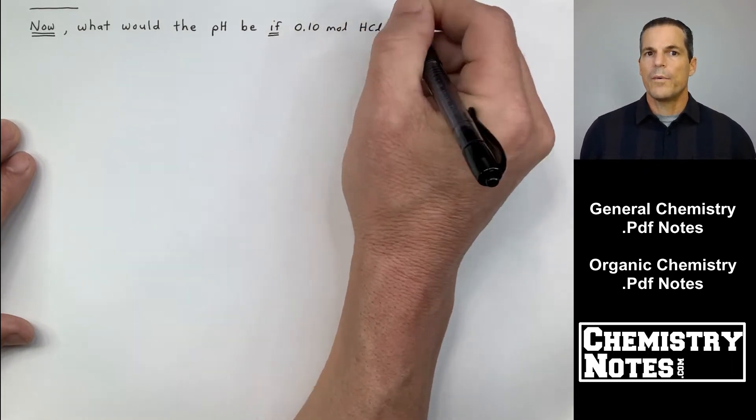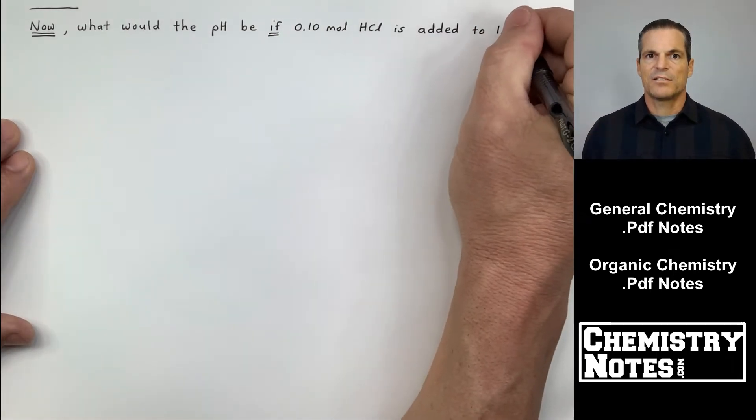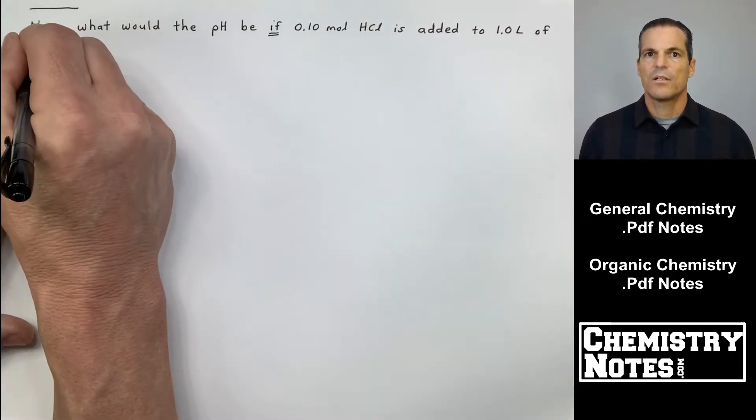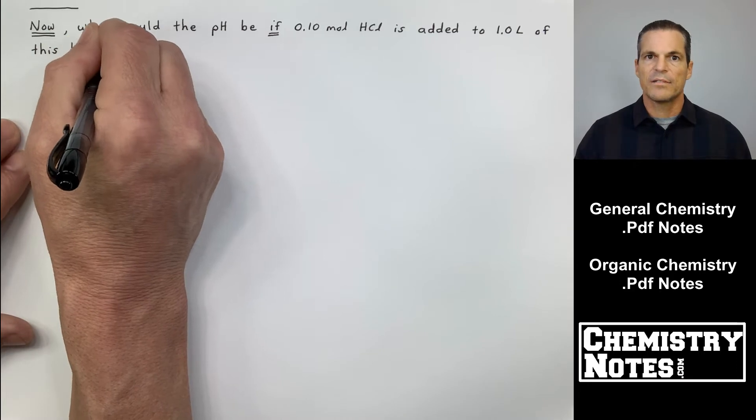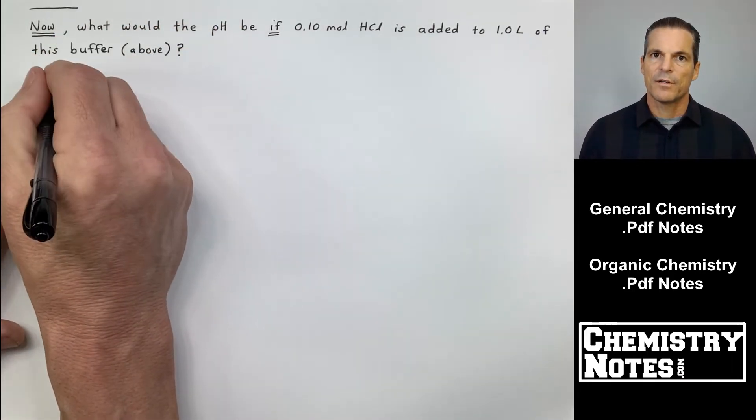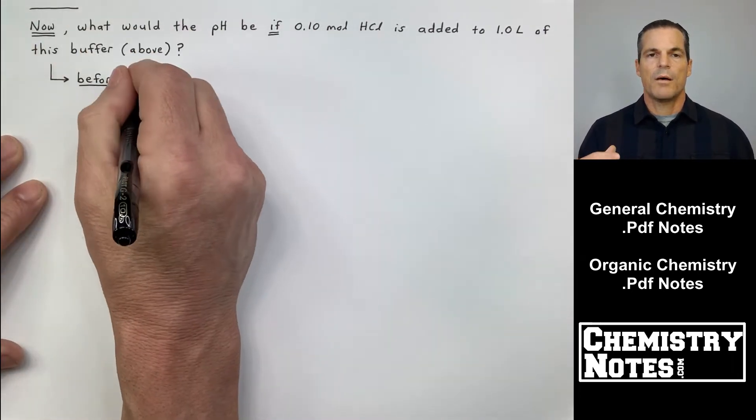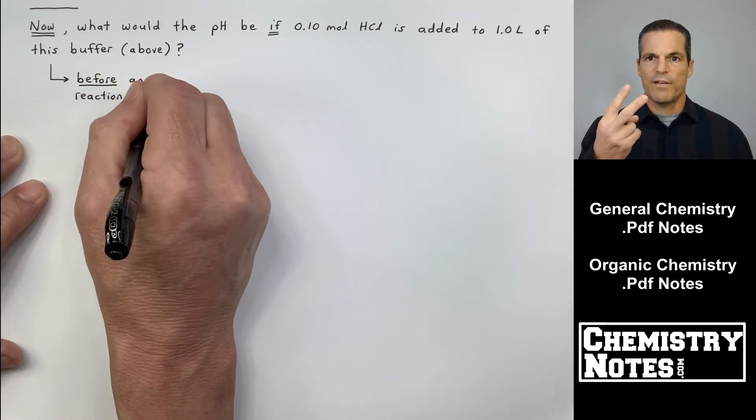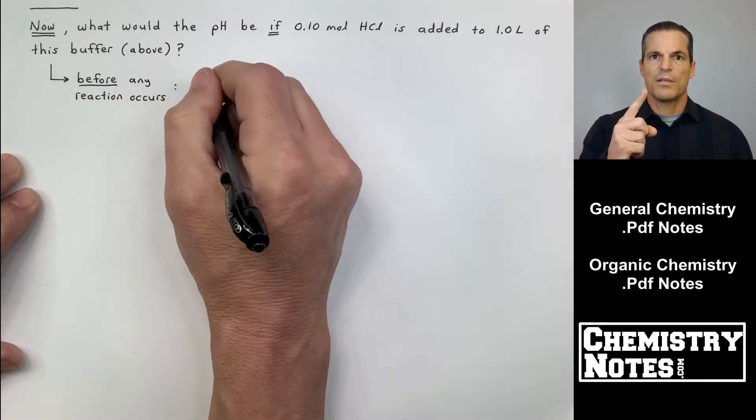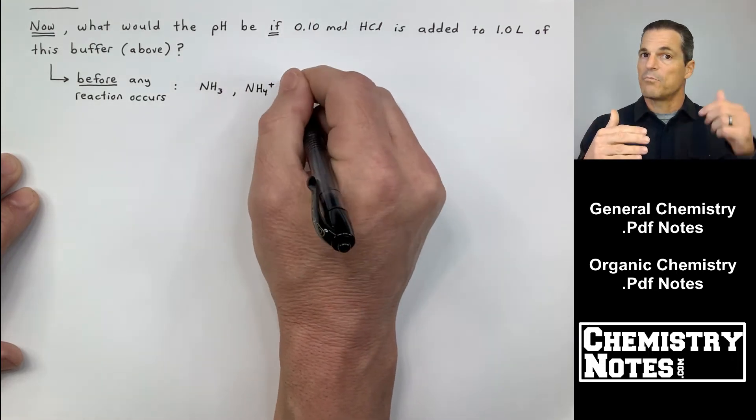So what would the pH be if suddenly I injected or added to the system a very strong acid? Would the pH go plummeting down from 9.05? No, it won't because this is a buffer. So let's take this into effect. Remember when we solve buffer problems where we're adding a base or an acid, we have two steps.